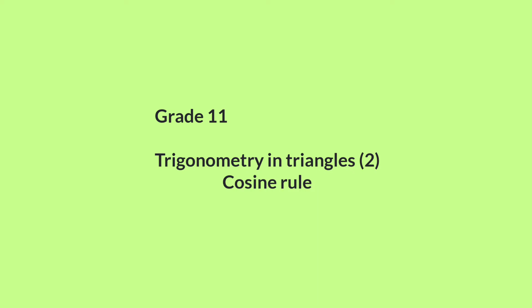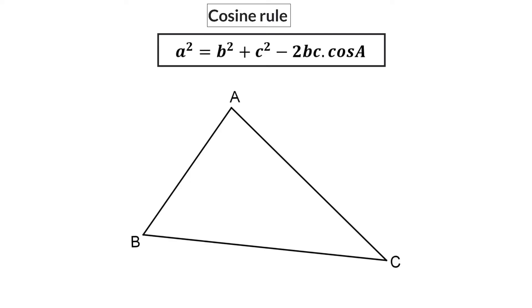In this lesson for trigonometry in triangles, we are going to have a look at the cosine rule. In the first lesson, we had a look at the sine rule. Today, we are moving on to the cosine rule, and it is named like this because the cos ratio is part of the formula.